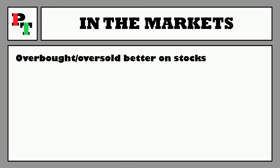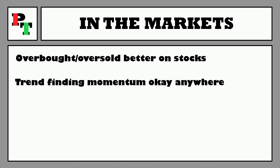In the markets, overbought/oversold readings tend to work better on stocks, where traders are more likely to take profits in stages, allowing price to consolidate. This happens in Forex, commodities, and energies too, but it's clearer on stocks, especially after a news event. For more volatile assets like Bitcoin, when it goes on a run or a fall, it gets overbought or oversold and does not care what the Williams Percent Range is telling you. Also beware of gaps — a big pre-market gap could really throw off your readings before the market readjusts.